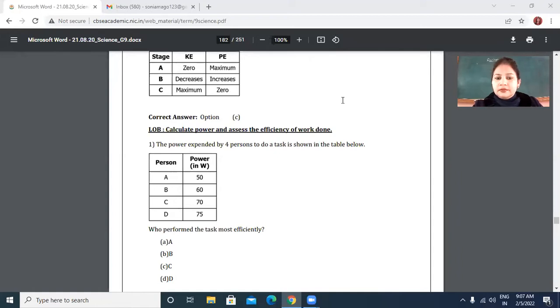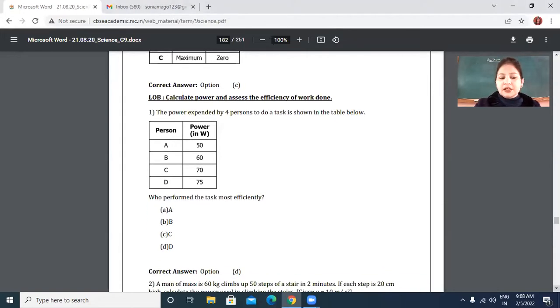Yes ma'am. Do you know the answer? So that is person D, right? That is person D, who is having most maximum power. So that is why he has done the work most efficiently. So answer is D.